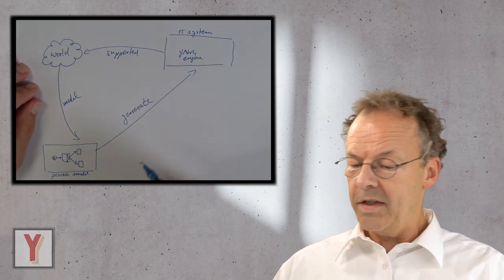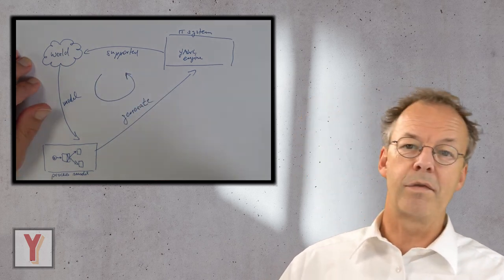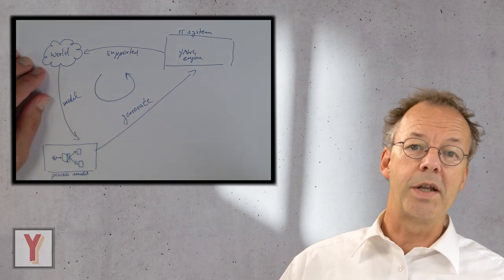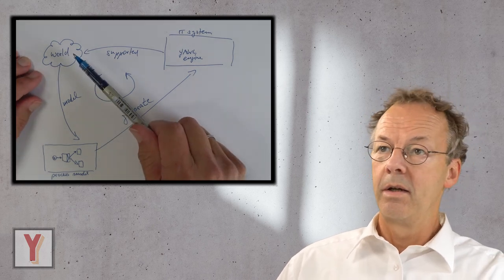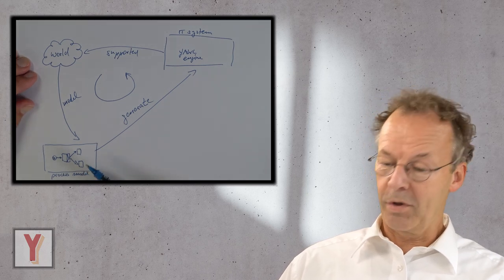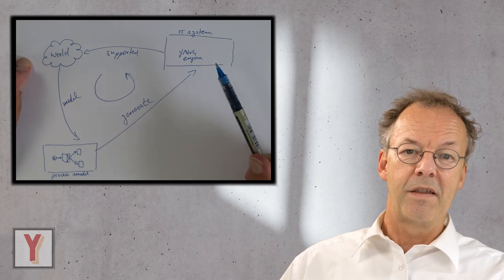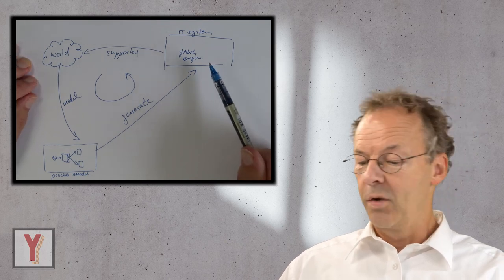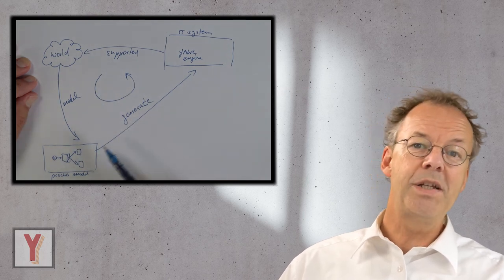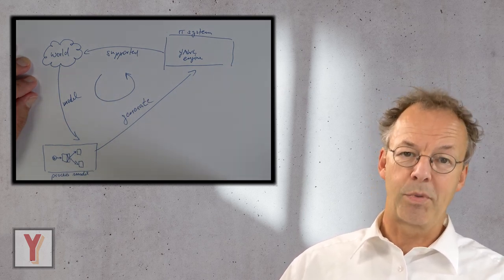And this is something like a closed circle. So if we have changes in the world which appear quite frequently, we create a new process model, we adapt the process model, we regenerate the new process that is then installed on the engine, which then supports the world. And so we have the possibility of flexibly improve and adapt our processes.